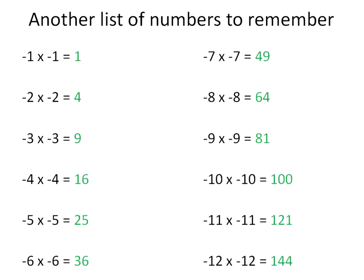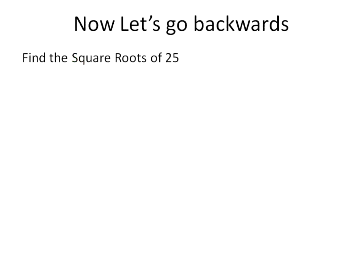Also another list to memorize and that is that negative 1 times negative 1 gives you positive 1. Negative 2 times negative 2 gives you positive 4. Negative 3 times negative 3 gives you positive 9. So these negative numbers multiplied together also give you positive perfect square answers.